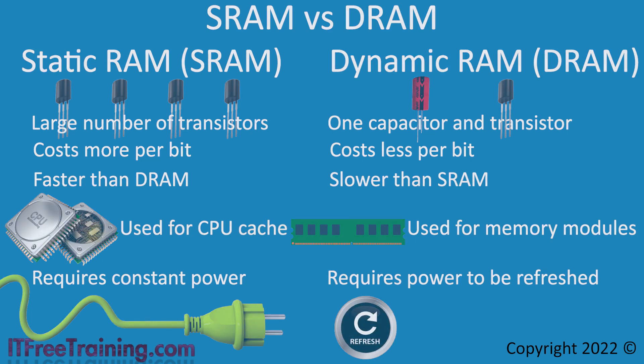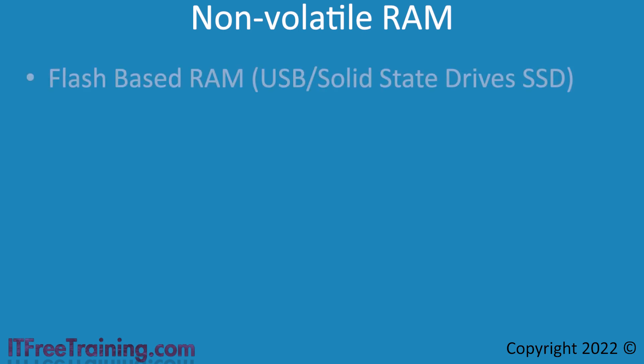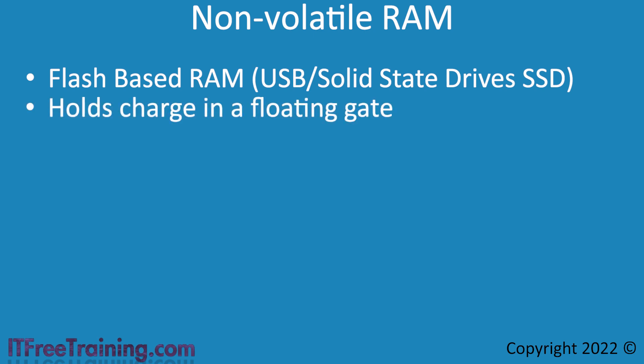The most common non-volatile RAM used nowadays is flash-based RAM, commonly used in solid-state drives, also referred to as SSD. This kind of RAM combines the capacitor and transistor into one. To achieve this, it holds a charge in what is referred to as a floating gate. A bit of data is held in what is referred to as a cell. Inside the cell, a charge can be held. This is different from a capacitor in that the charge is held inside an insulation material. The insulation material makes sure the charge cannot escape. Unlike a capacitor, once the charge is in the cell, it does not require power. The cell is estimated to hold a charge, depending on storage temperature, for 20 to 100 years.